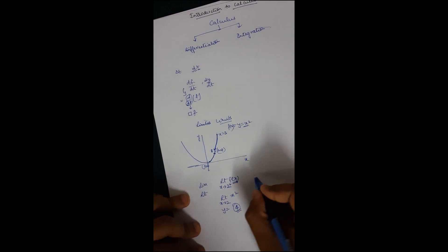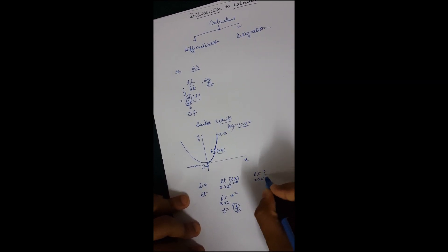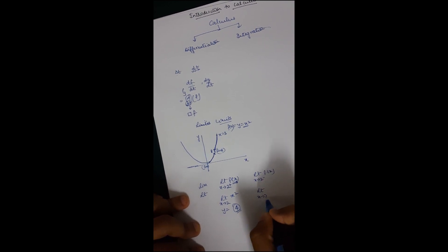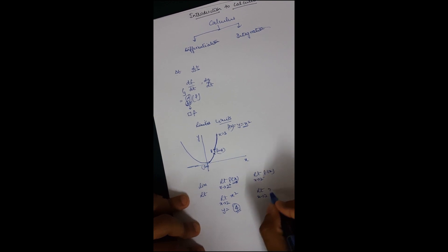From the left-hand side: limit as x tends to 2 minus of f(x), limit x tends to 2 of x squared — you can write it as tending to 4. This is the meaning of limits.